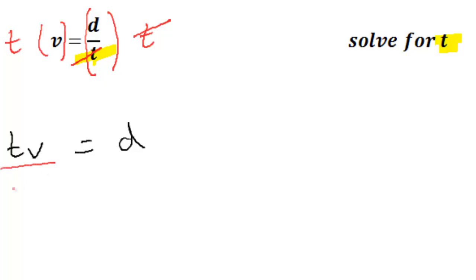You're just going to divide both sides through by V. The Vs cancel. And we have T equals D over V. Simple and straightforward.